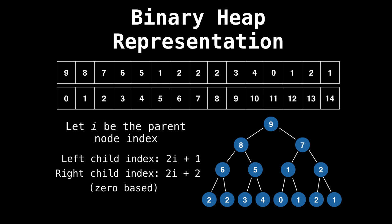And also another interesting property of storing a binary heap in an array is that you can easily access all the children and parent nodes. So suppose i is the index of a parent node, then the left child is going to be at index 2 times i plus 1. And the right child of that node is going to be at 2i plus 2. This is zero-based. If it's one-based, then you would just subtract one.